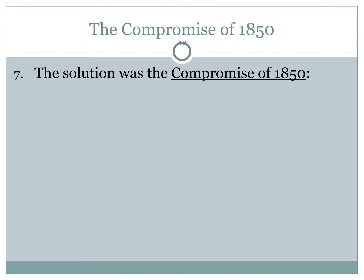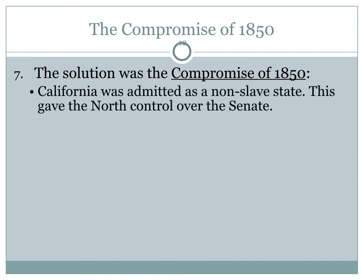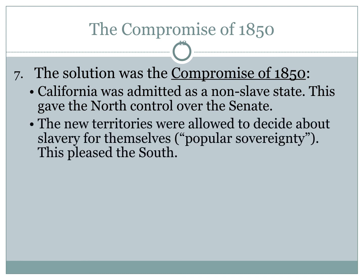The Compromise of 1850 produced several outcomes. First, California was admitted to the Union as a non-slave state, tipping the balance of power in the Senate in favor of the North — there would now be more senators from Northern states than Southern states. In return, the South received the provision that new territories would be allowed to decide the issue of slavery for themselves through popular sovereignty — the people in these new states would vote on whether to be free or slave states.